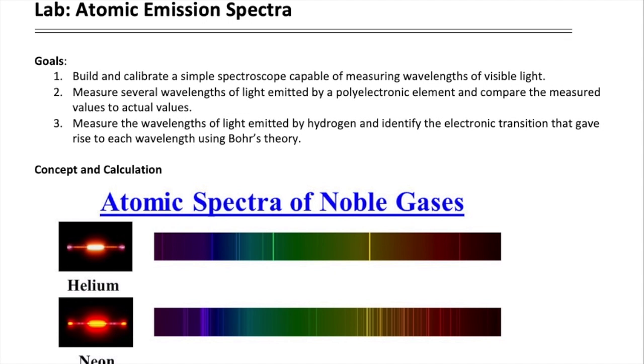Hi, everyone. Welcome to this video on the atomic emission spectra experiment. Today, we will build the spectroscope, an instrument used to measure wavelengths of light. We will calibrate our spectroscope and use it to measure light sources from various elemental gases.